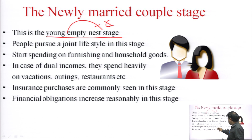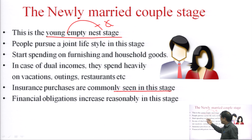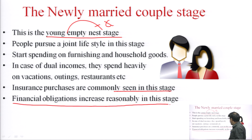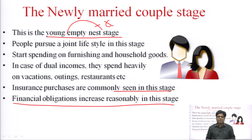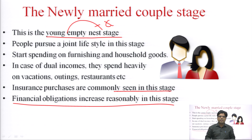In case of dual incomes, the couple spends heavily on vacations, outings, and restaurants since they still do not have the responsibility of children. Insurance purchases are commonly seen in this stage — both life insurance and general insurance policies. Financial obligations are increasing reasonably as the couple must maintain a home, buy groceries, and handle monthly expenses, but recreational purchases remain high.